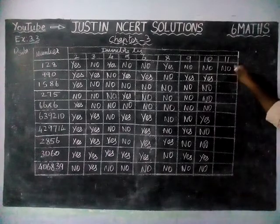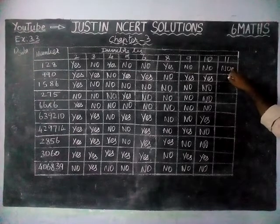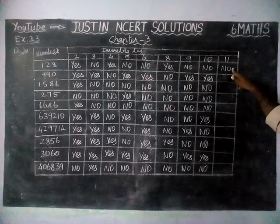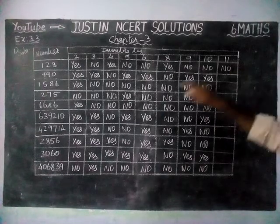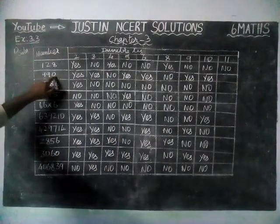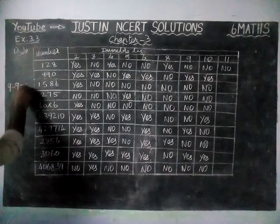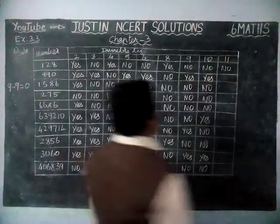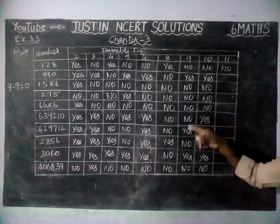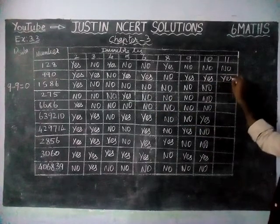Now we are going to check for divisibility by 11. According to the rule: find the sum of odd-position digits and the sum of even-position digits; if their difference is 0 or divisible by 11, that number is divisible by 11. For 990: sum of odd digits — 0 plus 9 is 9; even digit — 9; 9 minus 9 is 0 — we get 0, so this number is divisible by 11.